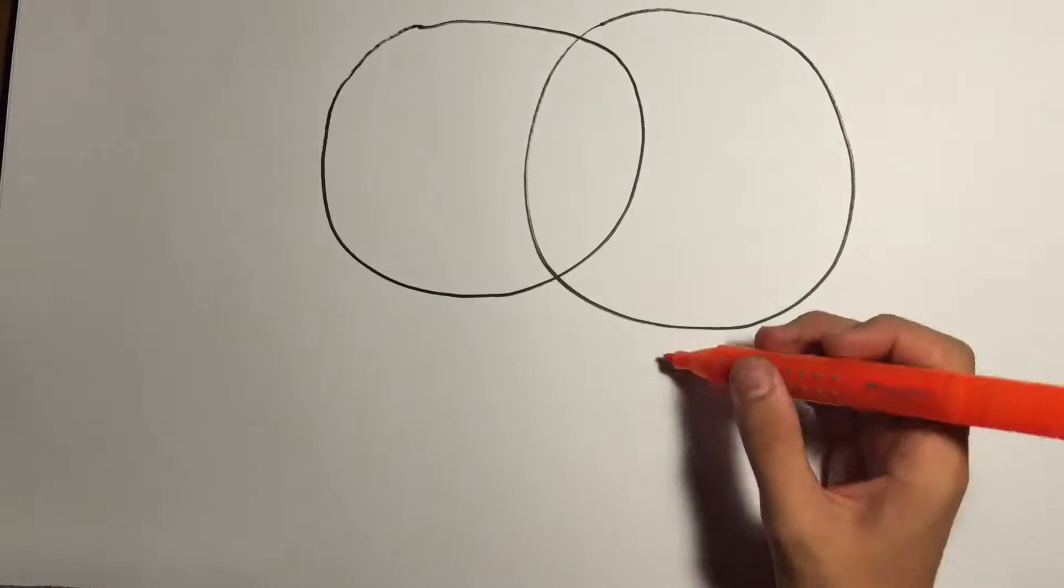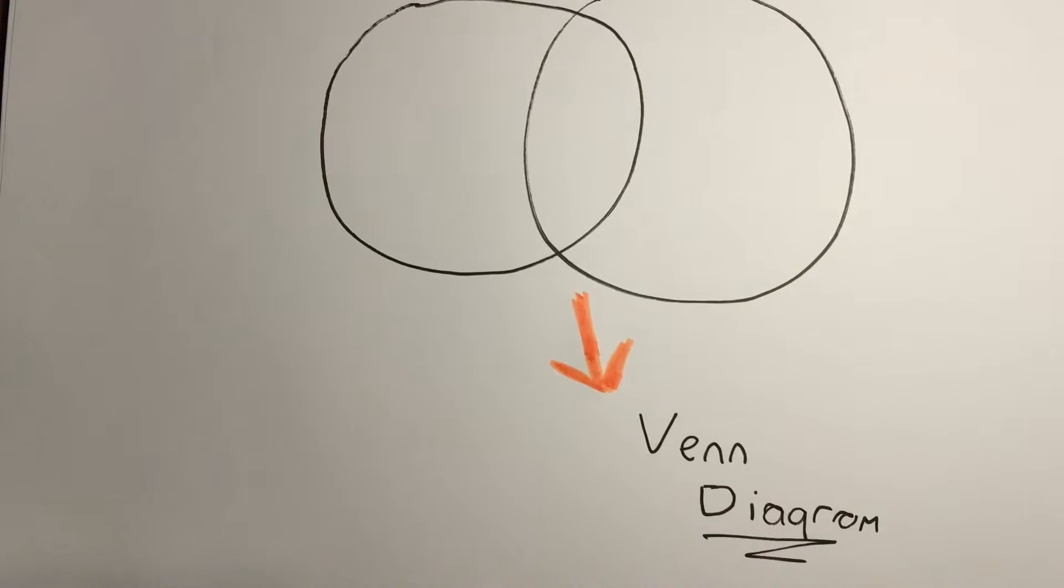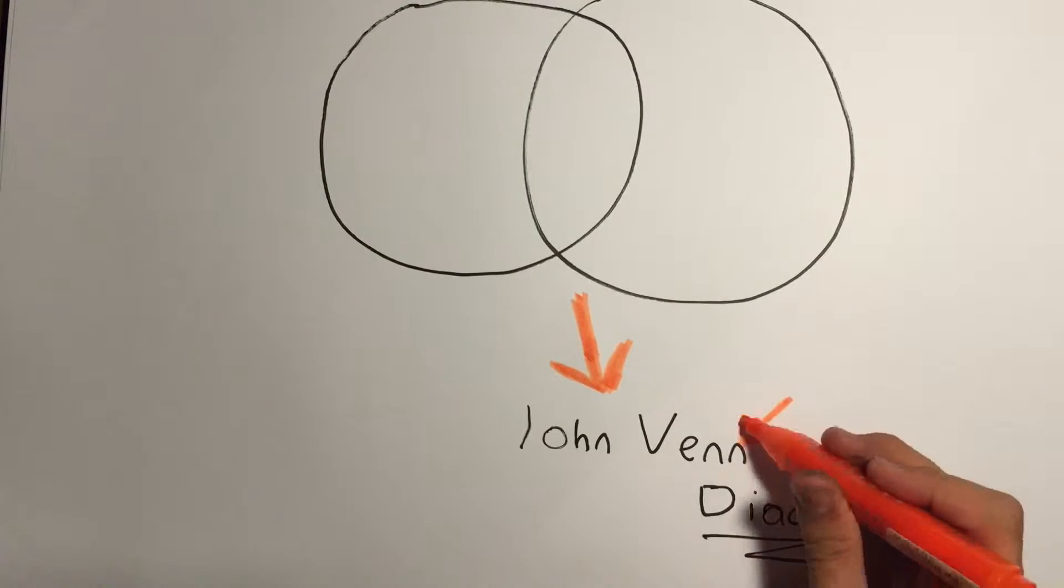Hi, this is called a Venn diagram. It is used to show things in sets. It was designed by John Venn in the 1880s.